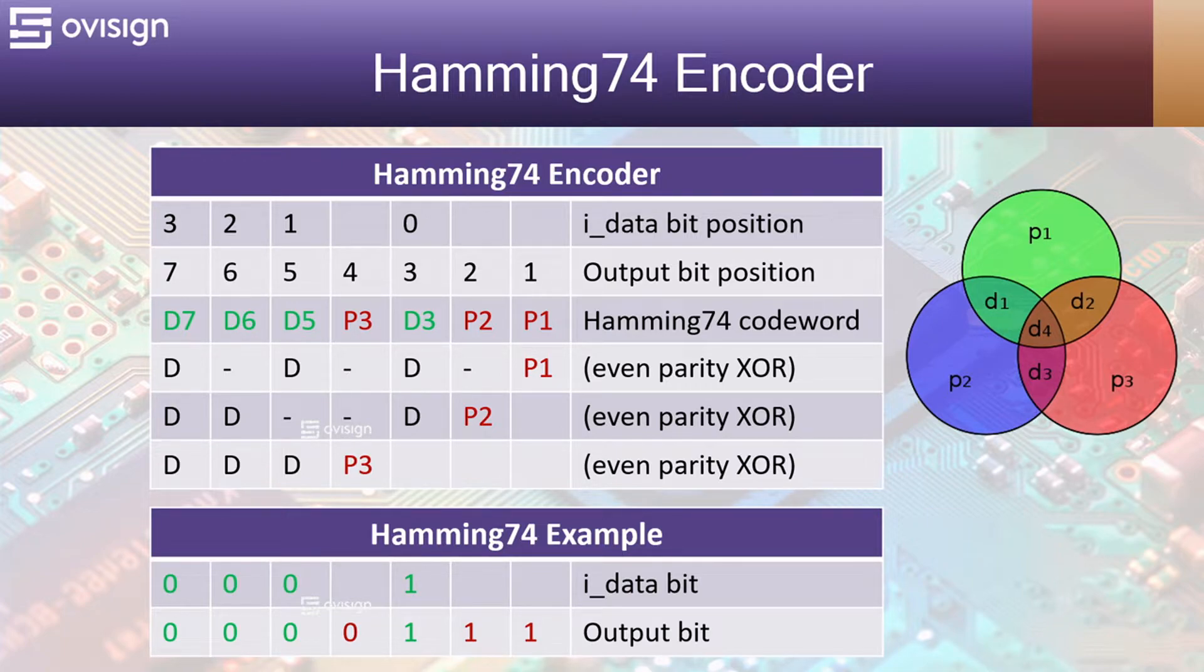The parity bits are usually placed in positions that are powers of 2 which in our case are 1, 2 and 4. You can read more about this in the resources below the video.